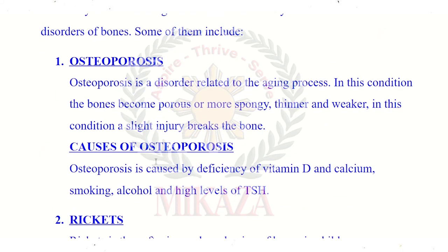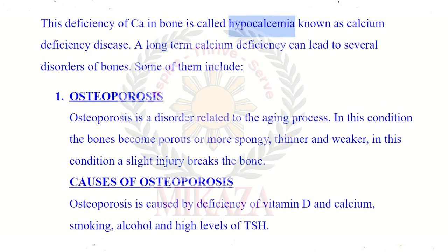Number one disorder is osteoporosis. Osteoporosis is a disorder related to the aging process. In this condition, the bones become porous — our bones develop many holes and become spongy. The bones become thinner and weaker and are easily broken. Even a slight injury can break the bone. So in osteoporosis, bone density is reduced and bones break easily.